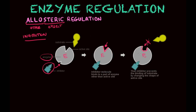The enzyme is able to be switched off by changing its shape. There are also ways it can be activated in the same manner — the enzyme will change its shape so it can fit the substrate and help in the reaction.